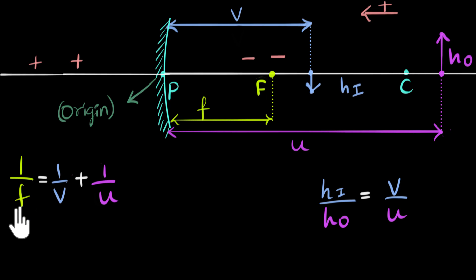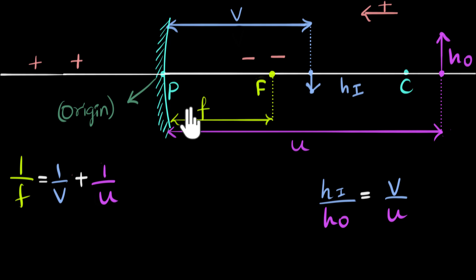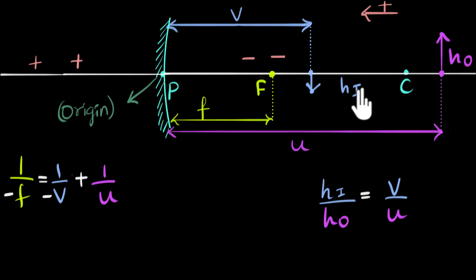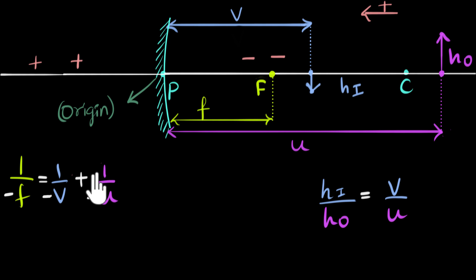Now all we have to do is write this formula with appropriate signs, and that formula will be the most general formula usable anywhere. Let's include signs. The focal length represents the position of the principal focus, but the principal focus is on the right side, which is negative, so f is a negative value. Similarly, v is the position of the image — that's also negative. U is the position of the object — again, negative.